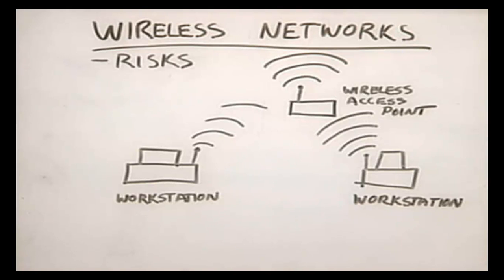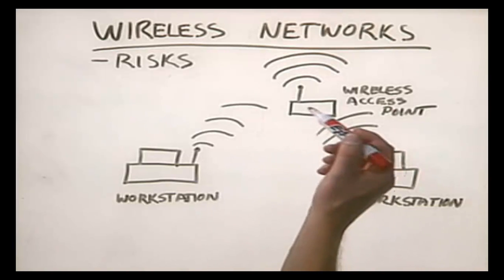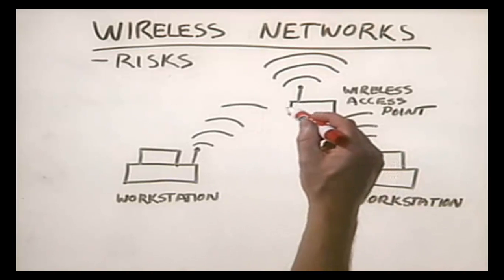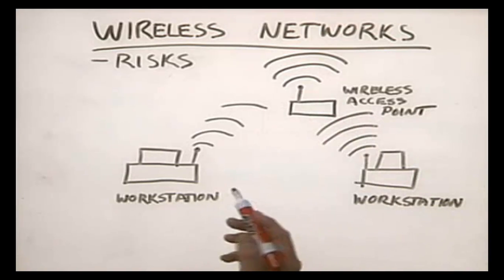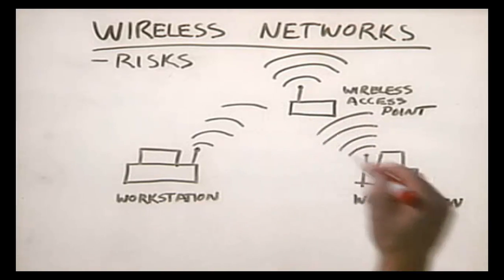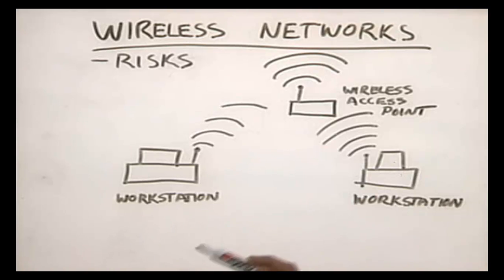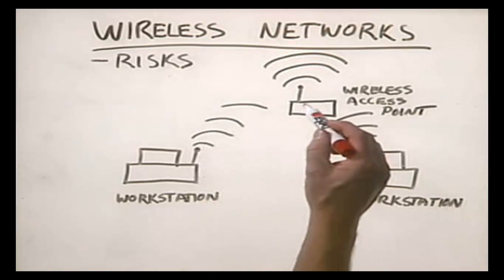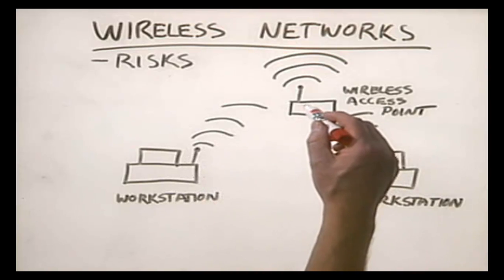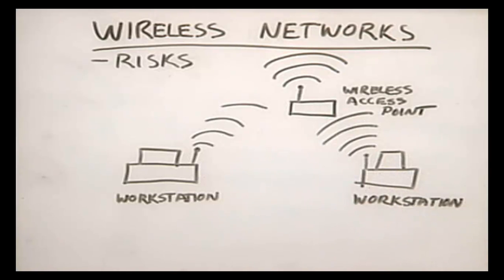To understand the risks associated with a wireless network, you first need to understand the basics of how a wireless network works. If I were going to set up a wired Ethernet network, I would have some kind of connecting point in the middle called a hub or a switch, and I would connect all the workstations to it. Then if one workstation needed to send data to another workstation or server, the information would travel up the wire to the hub or switch and then be propagated back down to the appropriate system.